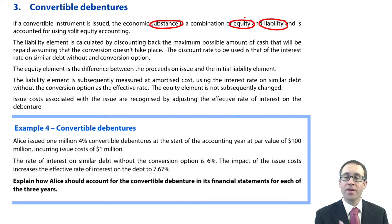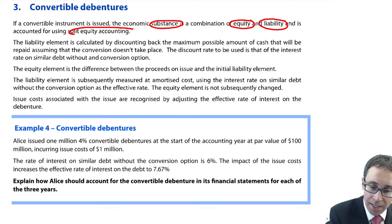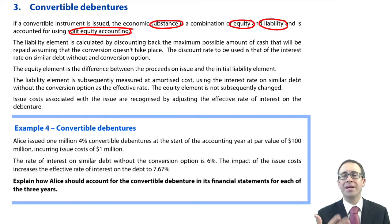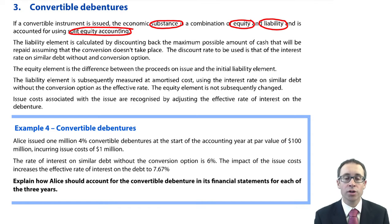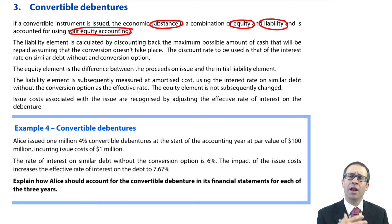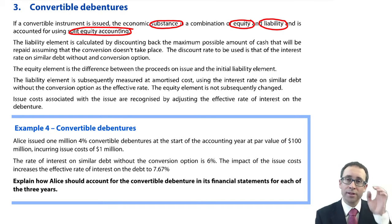So when we look at the accounting, we don't just debit bank and credit liability. We use what is referred to as split equity accounting, whereby we debit the bank, credit the liability, and also credit a portion of equity. Once you've got the liability element you treat that at amortized cost, and the equity element you just leave until conversion happens.